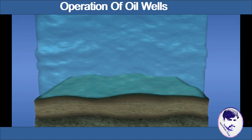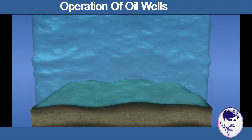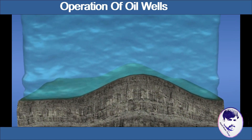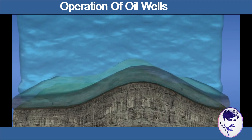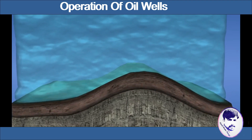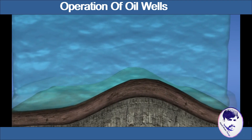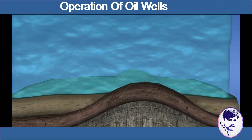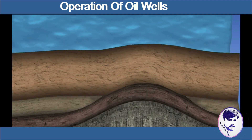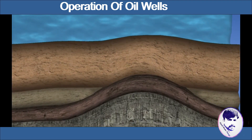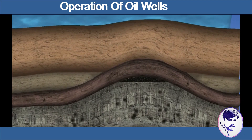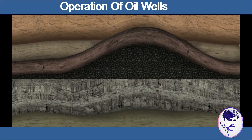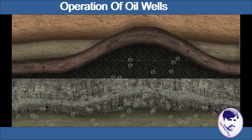Crude oil and natural gas are hydrocarbons, meaning they are compounds of carbon and hydrogen. Hydrocarbons were formed when large quantities of marine organisms, mainly algae, died of unfavorable conditions and were buried underneath the seabed. Over millions of years, because of substantial movements in the Earth's crust, these sedimentary layers sank thousands of meters deep. Isolated from oxygen, they turned into crude oil and natural gas due to a combination of high temperature and pressure.